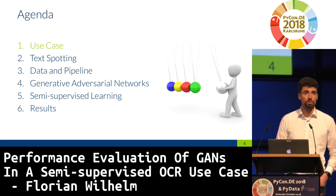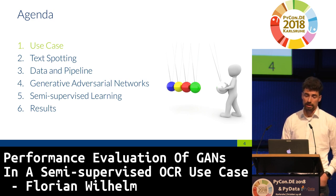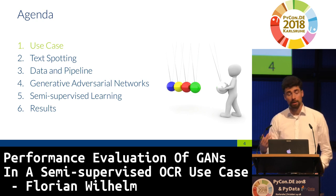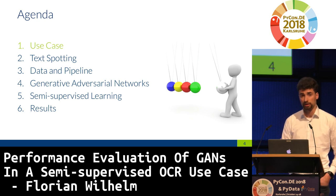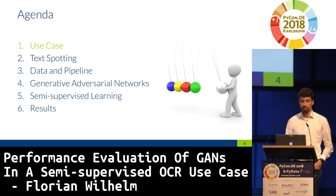To give an overview of the topics we'll cover today: first I'm going to motivate the use case, what it has to do with text spotting and its challenges. I'll show you the data we had at hand, the pipeline we came up with, a short introduction on generative adversarial networks and how we use them for semi-supervised learning, and finally some performance results comparing semi-supervised GANs with other techniques.